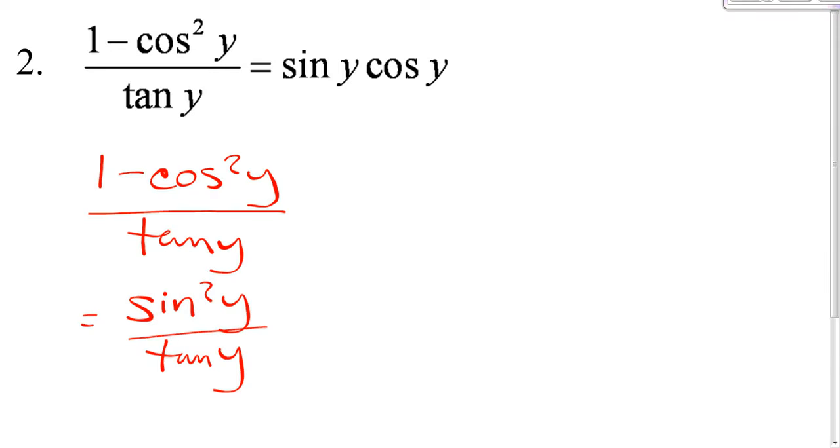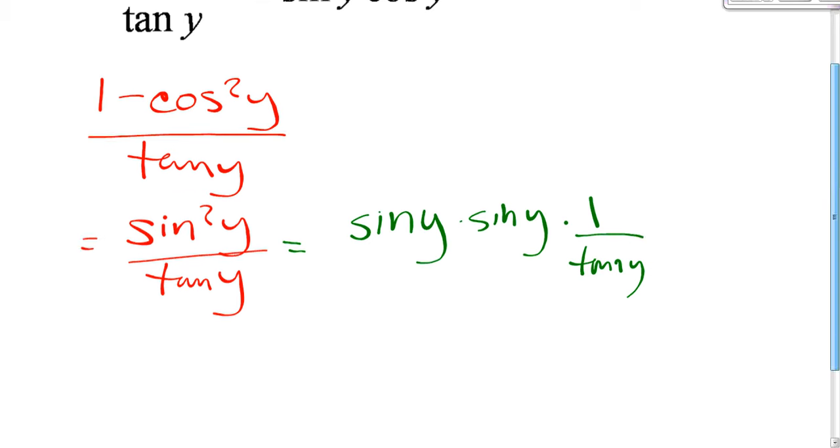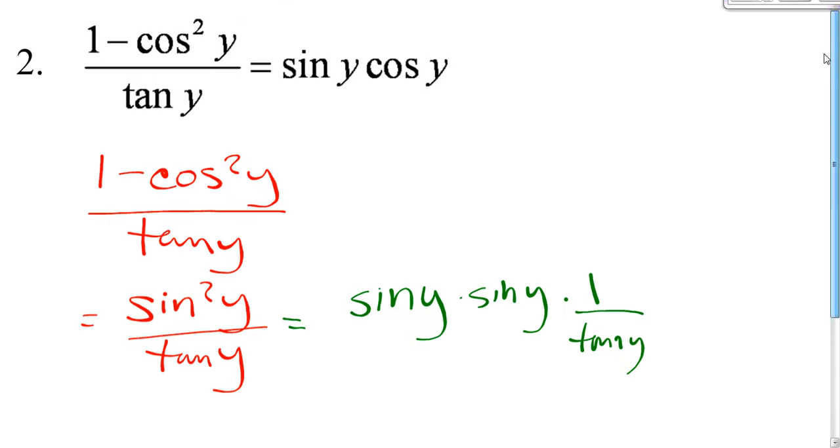So we need to get one. So the next step that I would do, and this is going to be the thing that you try to make things into a simpler step, is that I would write this out because I want one of my sines. I've got siny times siny times 1 over tany. And then start messing with that. And then from here, we already have the sine, so now we're going to play around with the other side because here, let's keep this. We want siny.